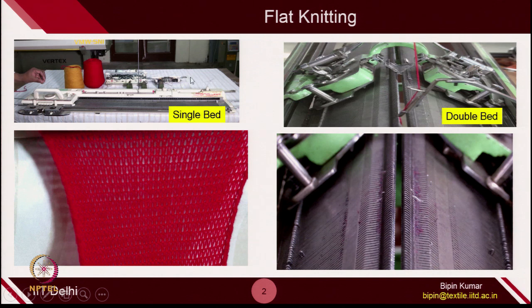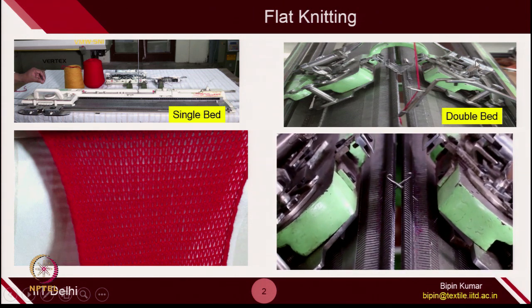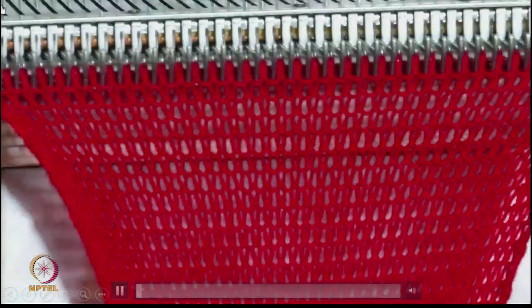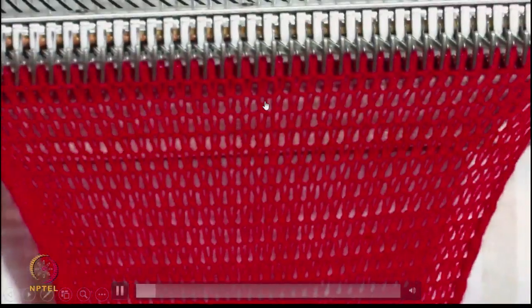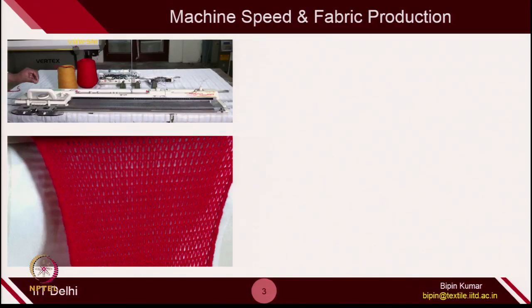In flat knitting, the carrier does not rotate around the cylinder because you have a flat bed. The carrier actually traverses from left to right or right to left. We have already seen 2 machines in previous weeks: single bed machine and double bed machine. In the double bed machine, there are 2 carriers for 2 beds, just moving from one side to the other. Since it is not rotating but traversing, the variables will change for fabric production on flat knitting machines.